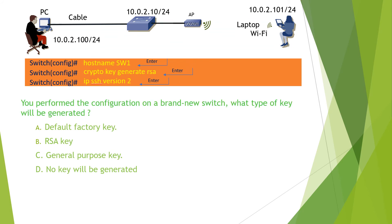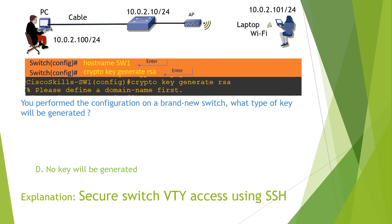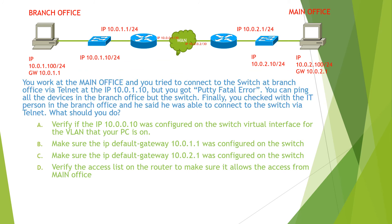The question reads: you perform the configuration on a brand new switch — what type of key will be generated? This is a tricky question, because as soon as you issue this command and hit enter, you will see a message indicating that to generate the RSA key on a switch, you need to define a domain name first. Therefore, the answer for this question is D. You can find the detailed explanation in the video 'Secure Switch VTY Access Using SSH.'